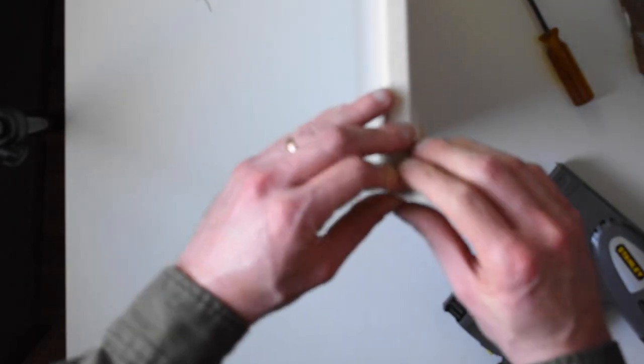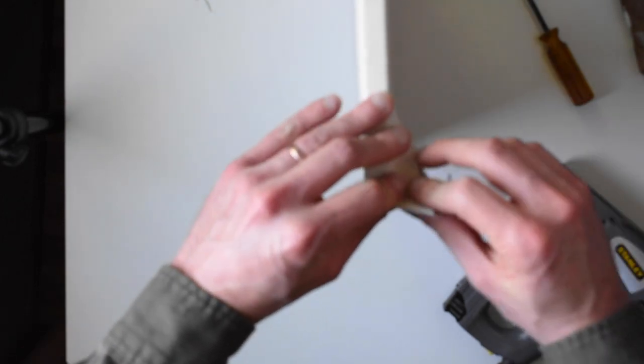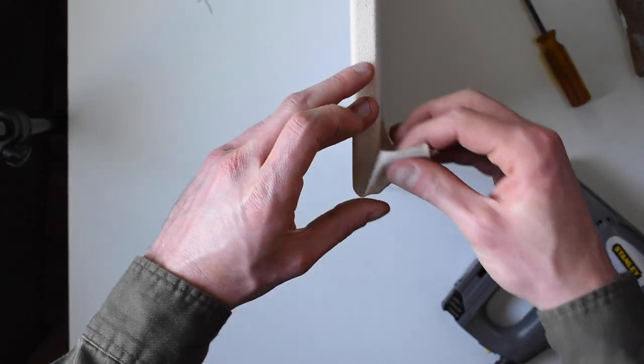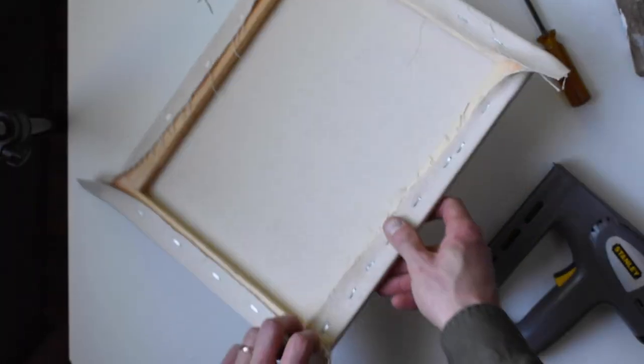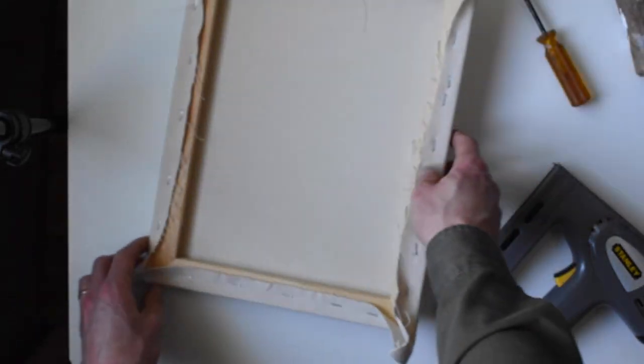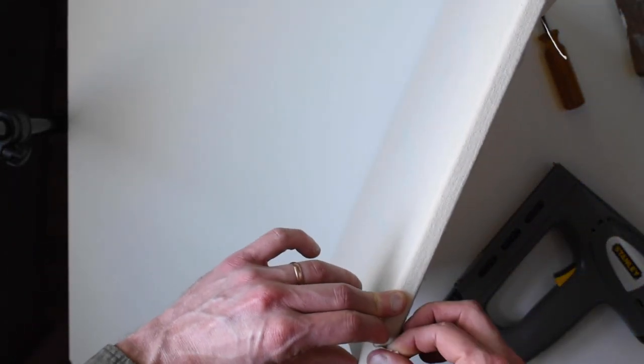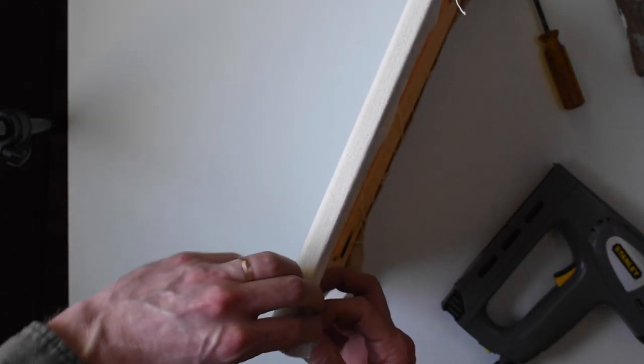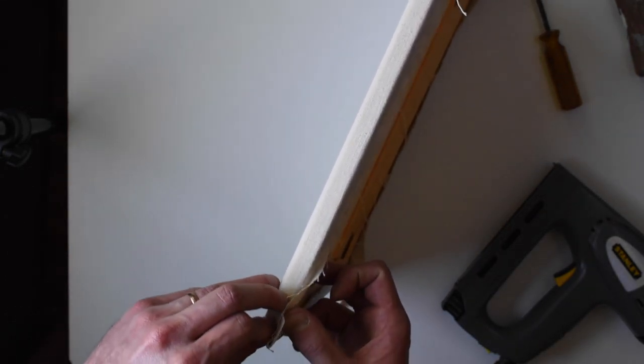So now we come to the corners, and these can be a little tricky to get to look neat just because you have all that bulky fabric. So as you can see with the staples we have in, they kind of flare out at the corners and we're going to fold them in and staple them down.